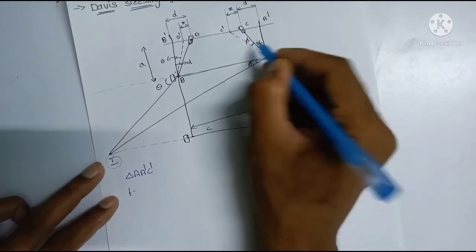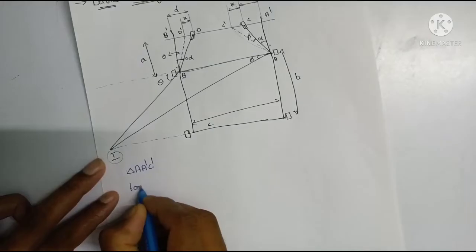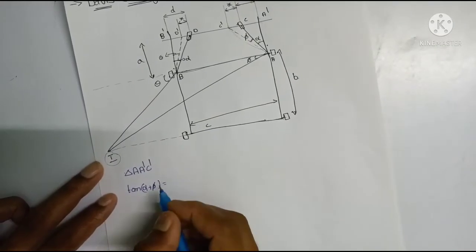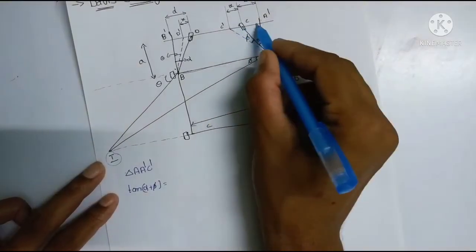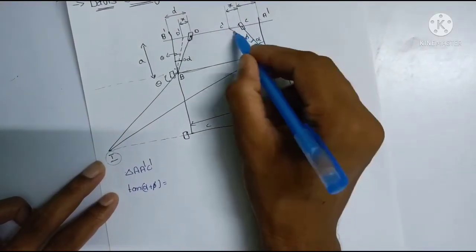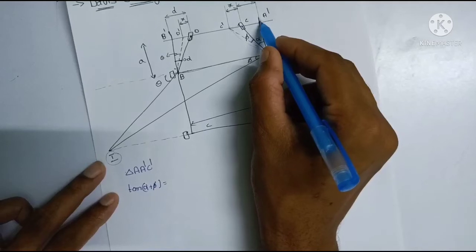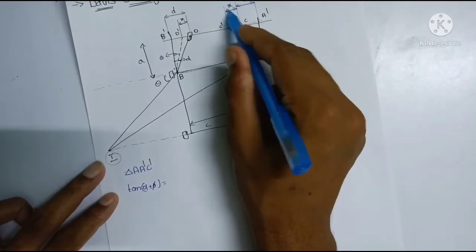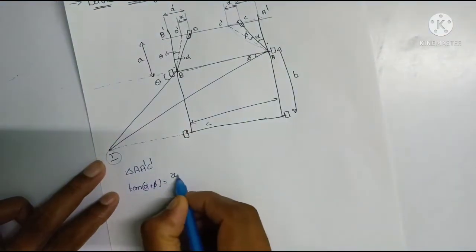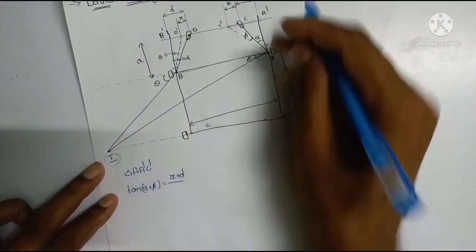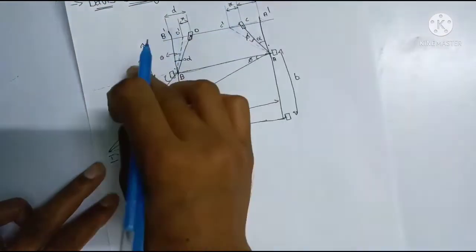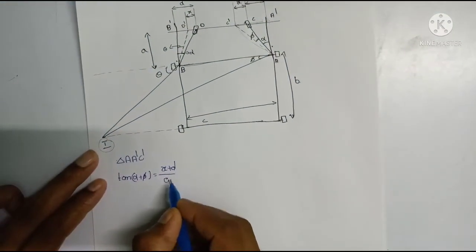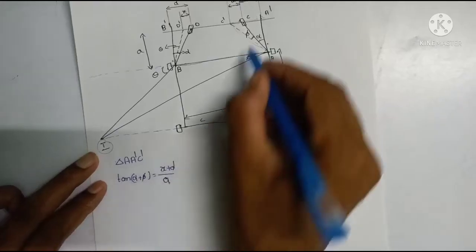Now, tan(α + φ) is equal to the tan theta formula: opposite side by adjacent side. The opposite side is A dash and the length is (d + x) divided by the length A.